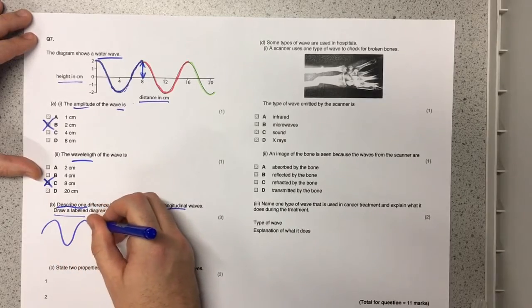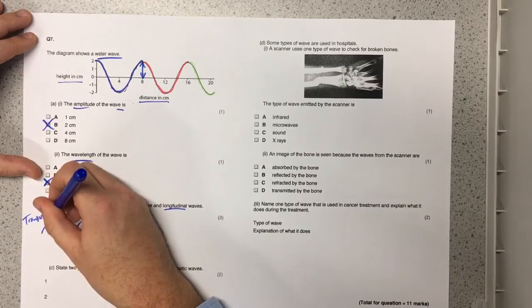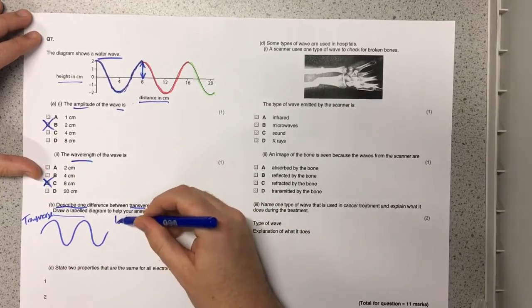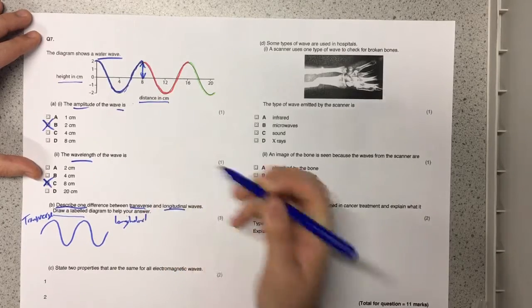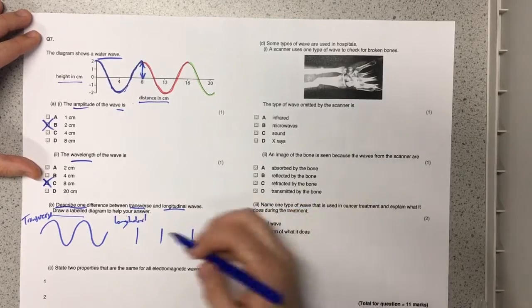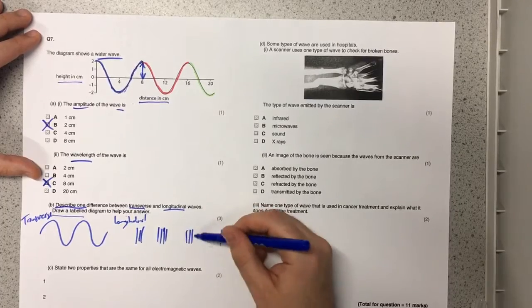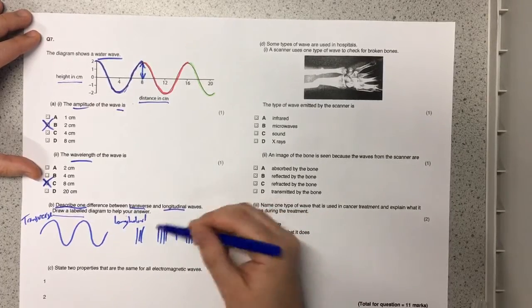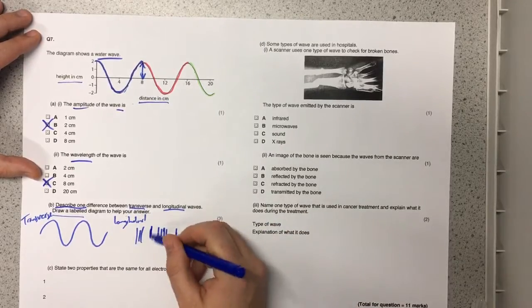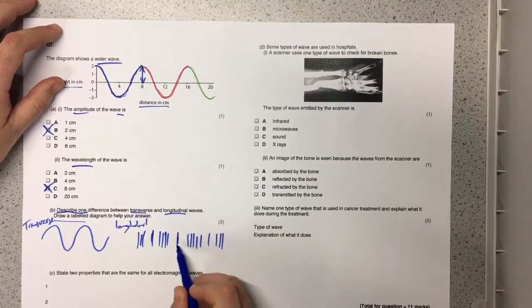So the first thing that we might draw is a transverse wave and we've got to label that so the examiner knows we know the difference. And then the other one we can draw is our longitudinal wave. So here we've got a series of compressions and rarefactions. It's a little bit more tricky to draw but as long as you've got some compressions really bunched up together then we can just put a few of the wave fronts in here. It doesn't matter too much about how neat it is, you can clearly see we've got some compressions and we've got some rarefactions.